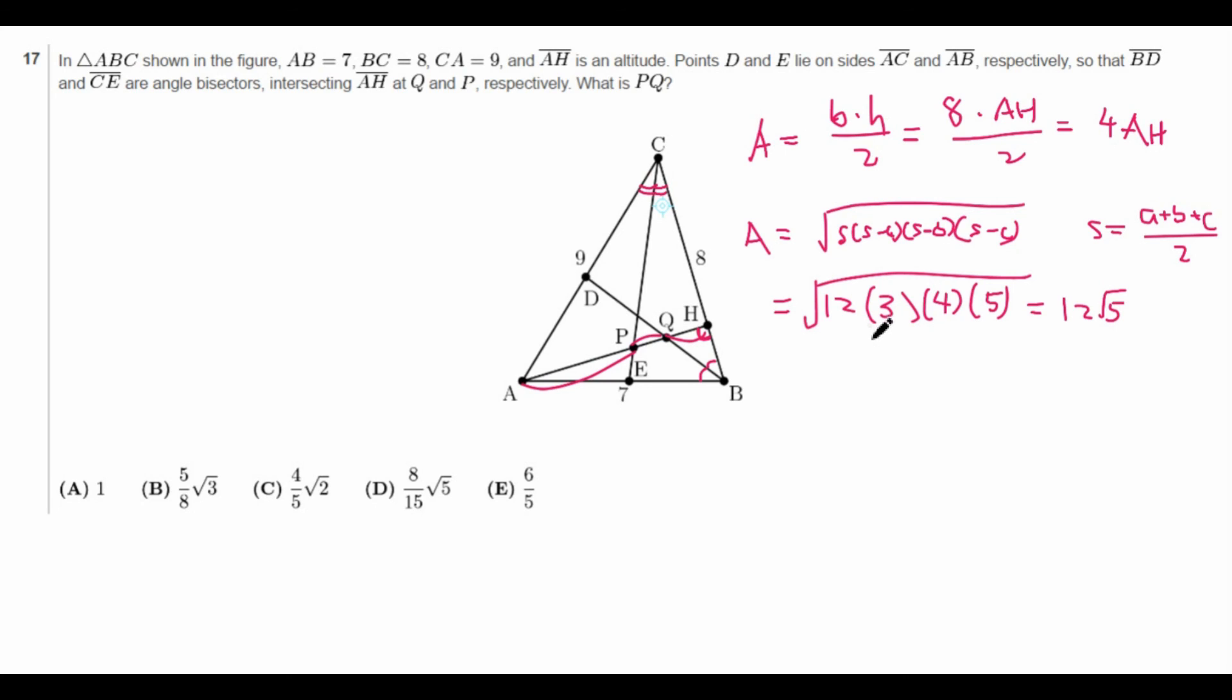And this works out to be equal to 12 times the square root of 5. However, we also know that the area is 4 times AH. So that means AH is simply equal to 3 times the square root of 5. So now we know that this thing is equal to 3 square root of 5.